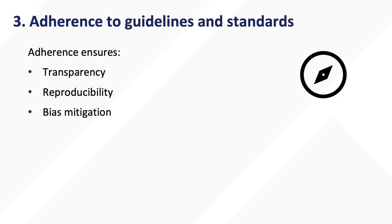The third requirement of a systematic review is adherence to guidelines and standards set by various organizations to ensure transparency, reproducibility, and bias mitigation.